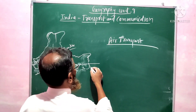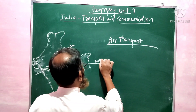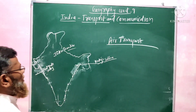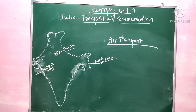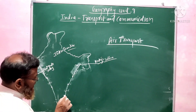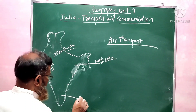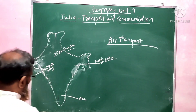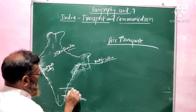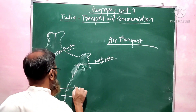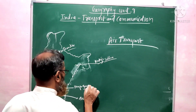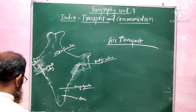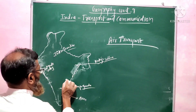In Calcutta, we have Netaji Subhashchandra Bose International Airport. In Chennai, this airport is called Anna International Airport. And in Bangalore, it is called Kempegowda Devanahalli International Airport.